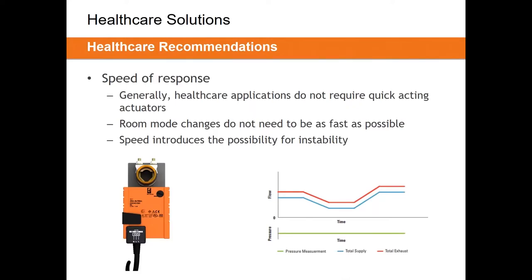Regarding speed of response: in healthcare applications, quick-acting actuators are generally not needed. A standard actuator with a 90-second stroke time can take you from six air changes to 20 in about a minute — extremely quick for an operating room. Compounding pharmacies are essentially constant volume and don't need fast actuators. Quick-acting actuators are generally reserved for laboratory environments. Introducing speed into a control loop also introduces the possibility of instability, making control harder.